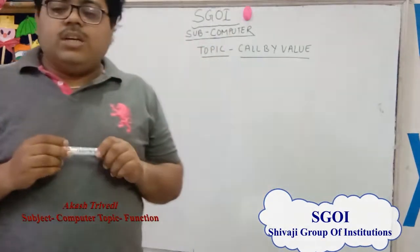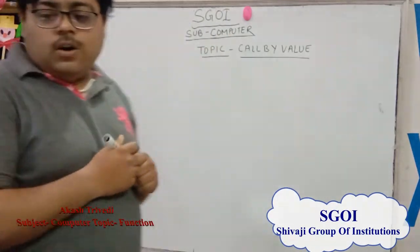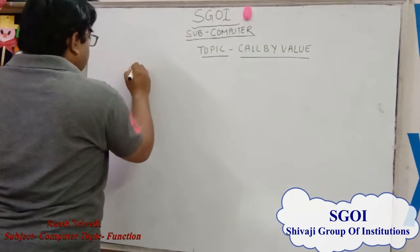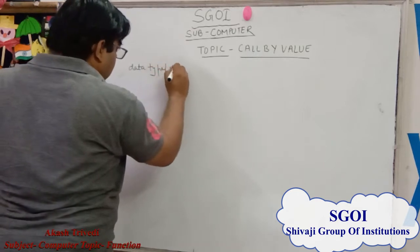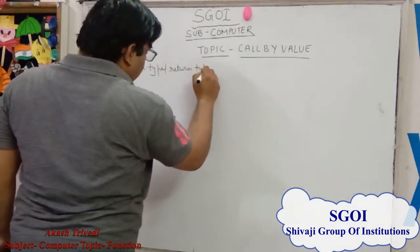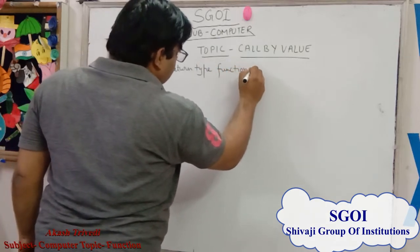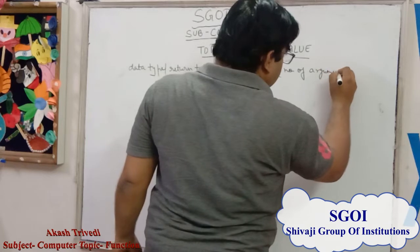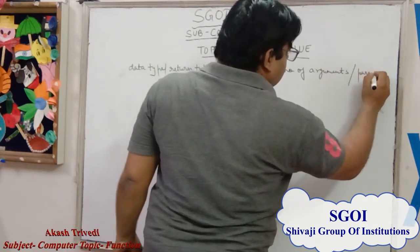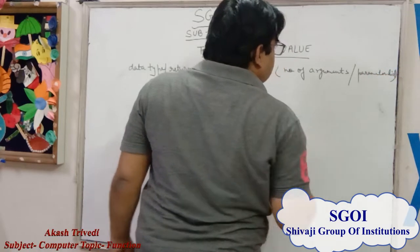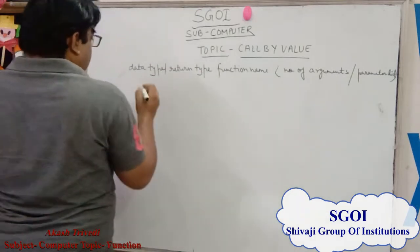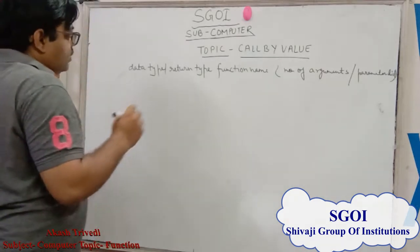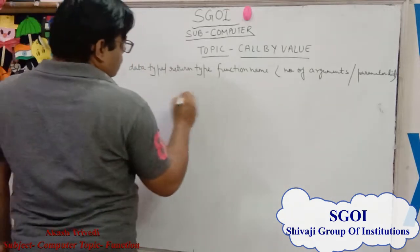You already know a function is a sub-program that is used to perform predefined operations. So how do we declare a function? Firstly we write the return data type, then the function name, and after that the number of arguments or parameter list. This is the function header. After that, if you want to use call by value or call by reference, we use the function name.